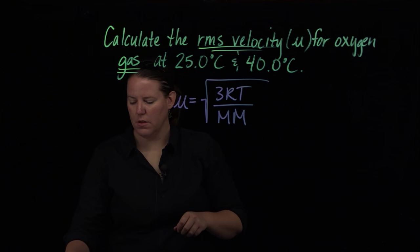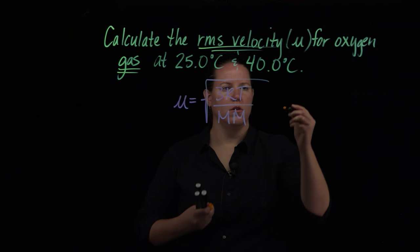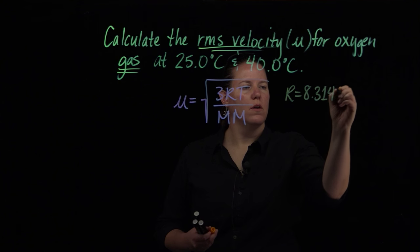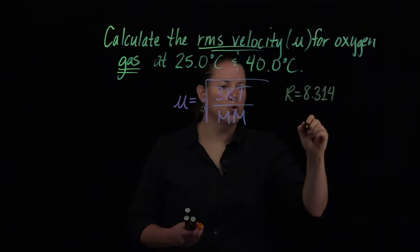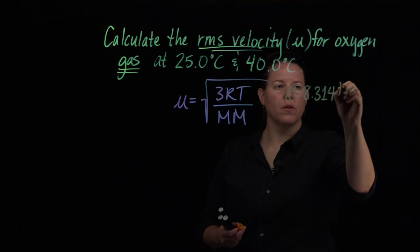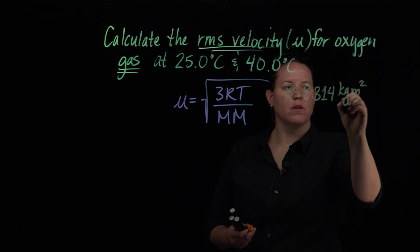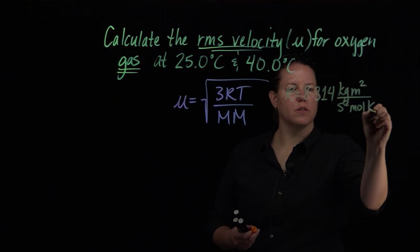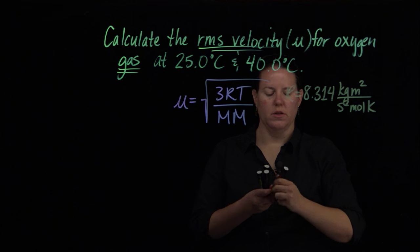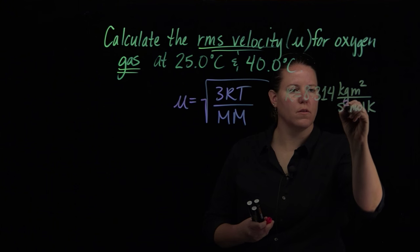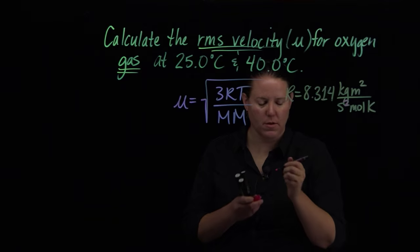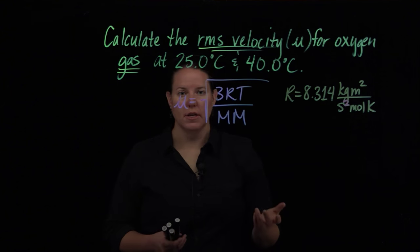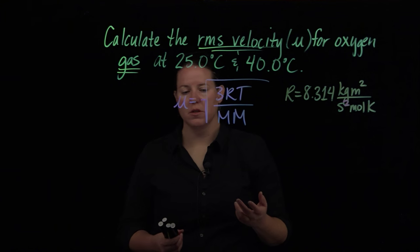We're remembering that R is our ideal gas constant, 8.314. Instead of using joules per mole K, here we're using kilograms meters squared per second squared mole K. That should be squared. The temperature has to be in Kelvin and molar mass has to be in kilograms per mole.